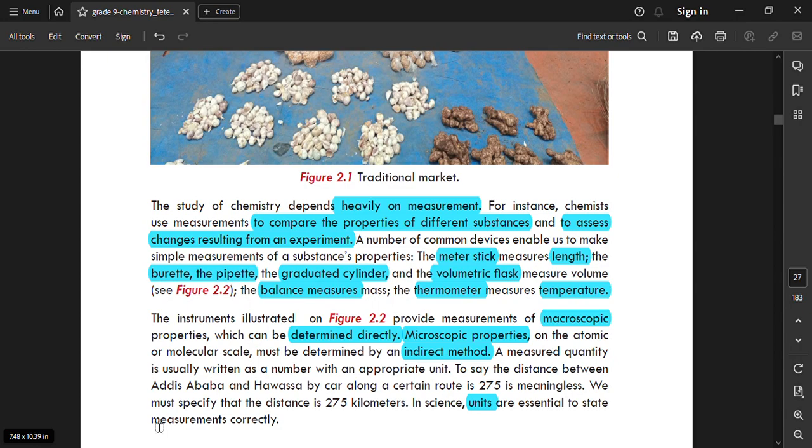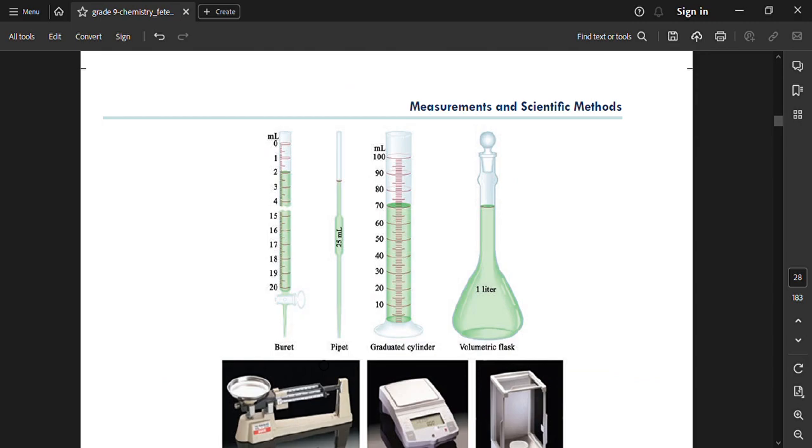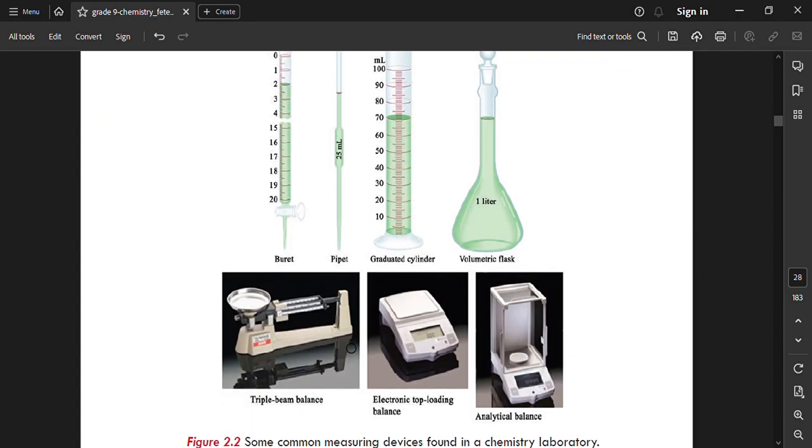In science, units are essential to state measurement correctly. Units are essential for measurement. Distance is in kilometers, volume in cubic meters, and mass in appropriate units.